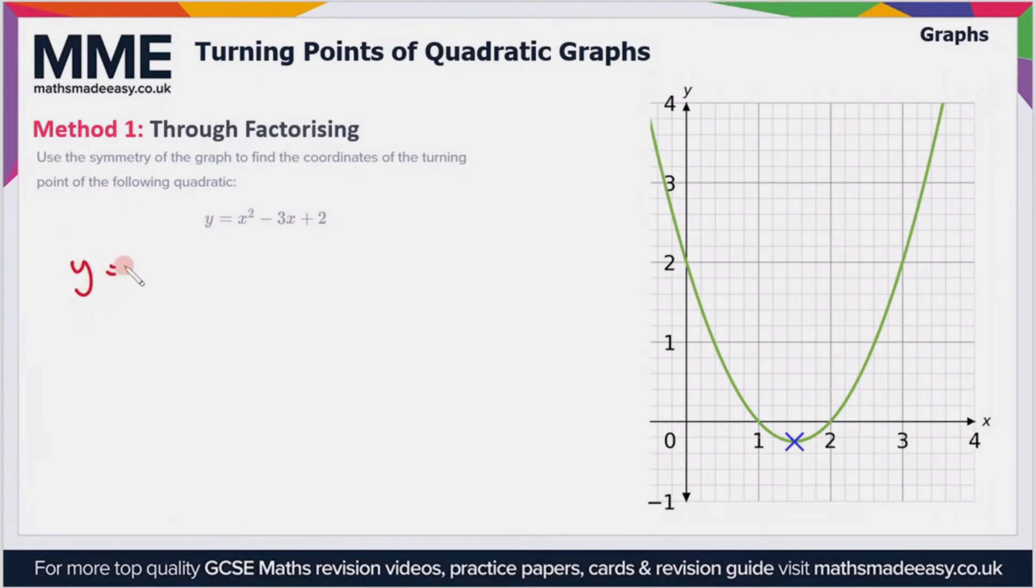So if we have y equals x squared minus 3x plus 2, I'm just writing it out so you can see it more clearly. Then we need to factorize this quadratic, and the way we do that is we look for two values which add together to give minus 3 and multiply together to give plus 2.